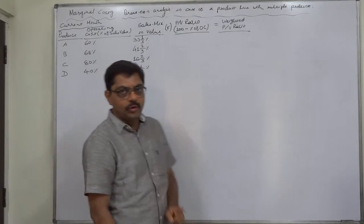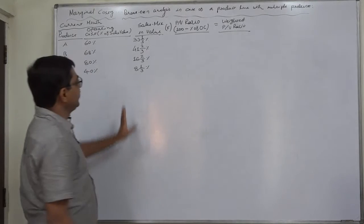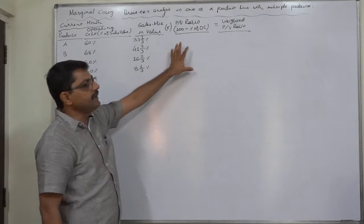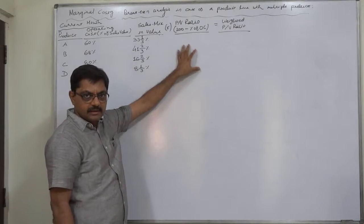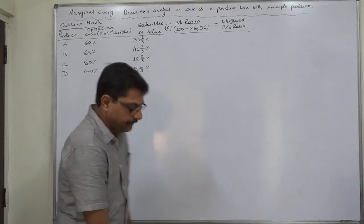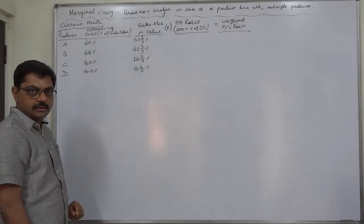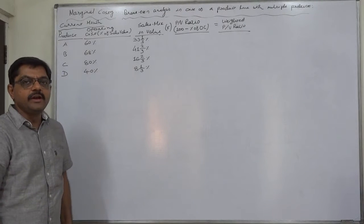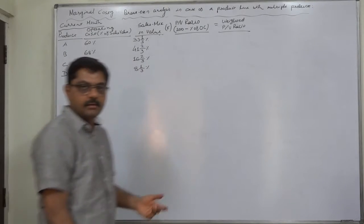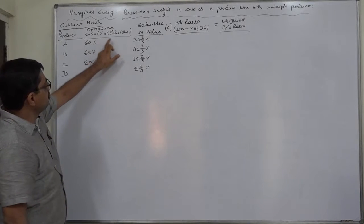When we have percentage or proportion of sales value of each product, then we should calculate weighted PV ratio by multiplying the percentage of sales mix in value by the PV ratio of the product. Then we should calculate the overall BEP. For this purpose we need PV ratio of each product, but there is no information regarding selling price or variable cost or anything of the product.